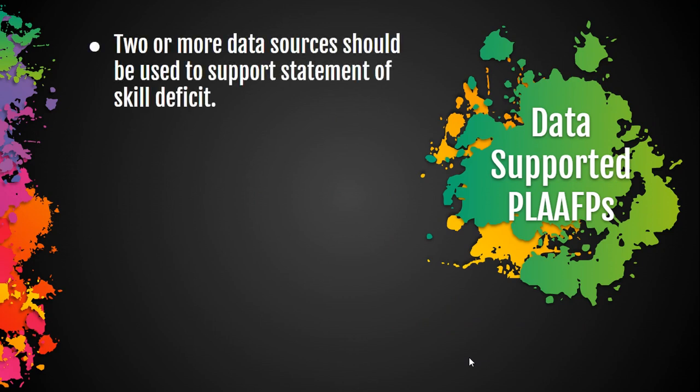Two or more data sources should be used to support a statement of skill deficit. When we state that a skill is an area of deficit, we want to make sure that it is corroborated on more than one assignment or assessment. If a skill is truly a deficit, it should be apparent in multiple places.